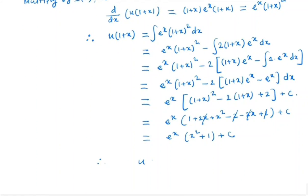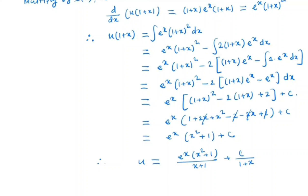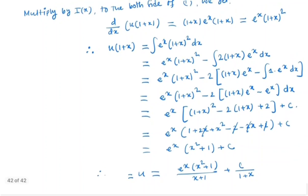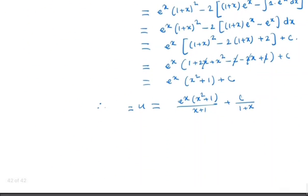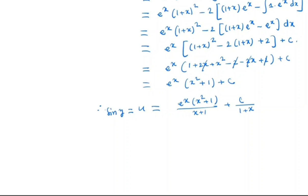So we have u equals e^x times (x^2 + 1) divided by (x+1), plus C/(x+1). And in the first step we set u equal to sin y. So the general solution is: sin y equals e^x times (x^2 + 1)/(1+x) plus C/(1+x), which is the general solution.